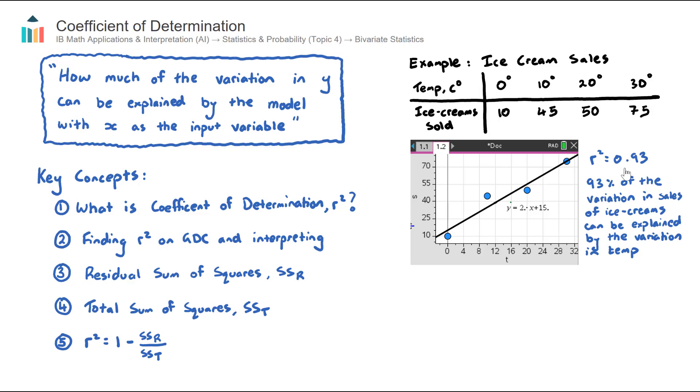93% of the variation in ice cream sold in this example can be explained by the temperature. Now, sometimes you might get an R squared value of, say, 0.5, and that would mean that only 50% of the variation in your dependent variable, your output variable, could be explained by the input variable. So that's what the R squared value means. It's a measure of the prediction power of your model. So how much of the variation in the output can be explained by your model and the independent variable that you chose?